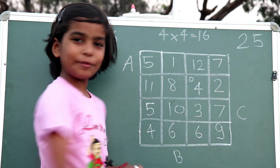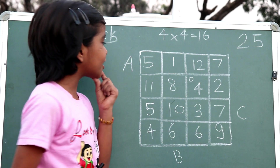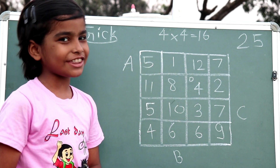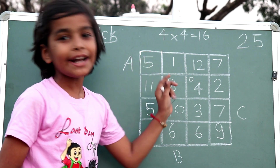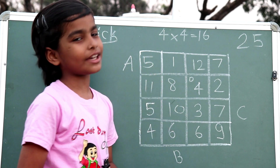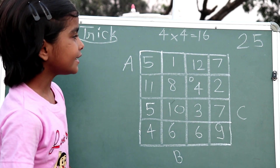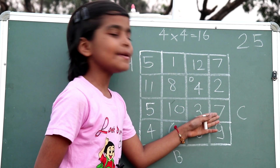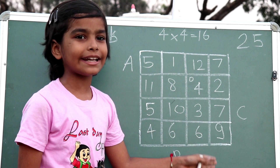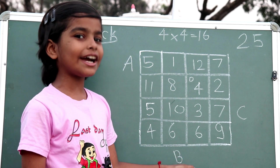If we add 4, we will get 25. If we add 4, we will get 25. So let's do this. When we add 5 in 11, how much will we get? 16. When we add 1 in 16, how much will we get? 17. When we add 8 in 17, how much will we get? 25. Let's see one more. When we add 7 and 3, how much will we get? 10. When we add 9 in 10, how much will we get? 19. When we add 6 in 19, how much will we get? 25.